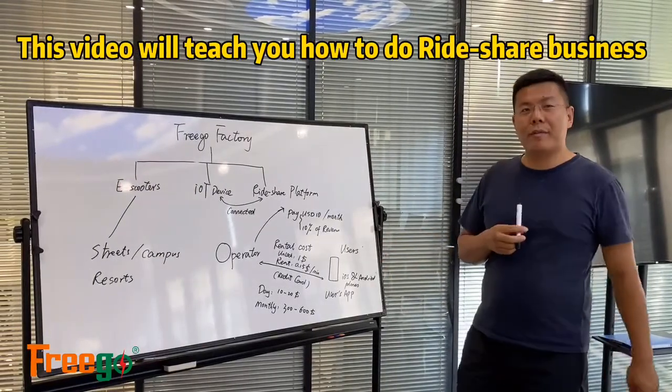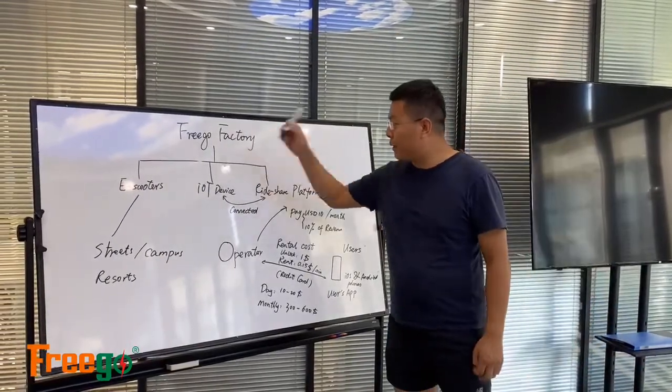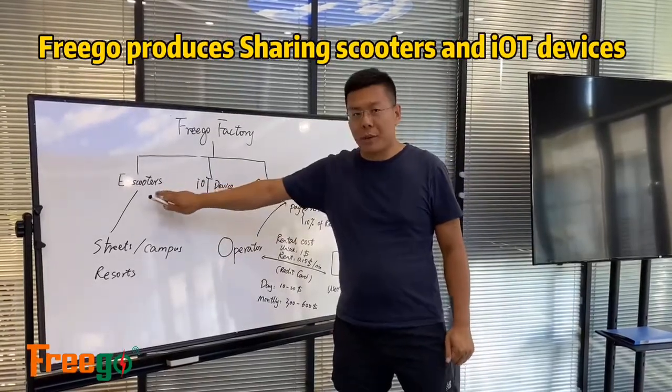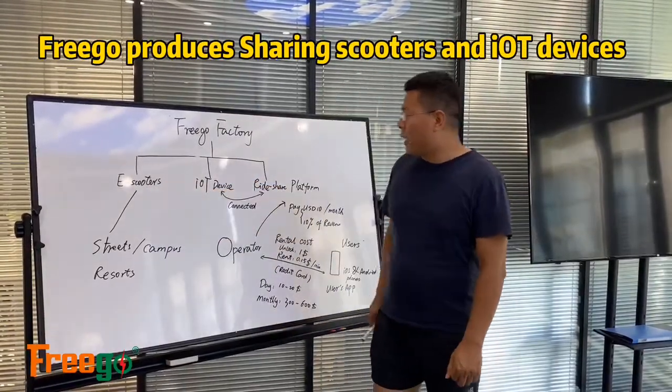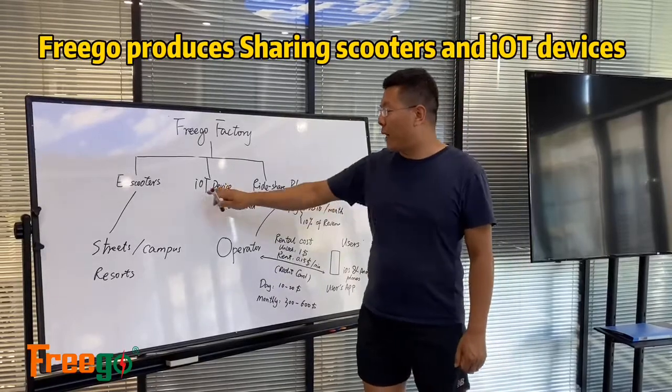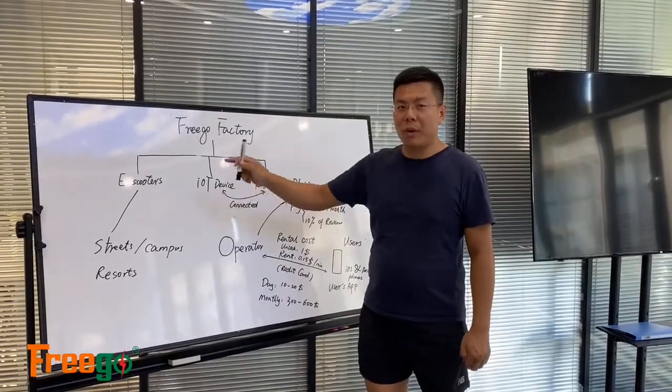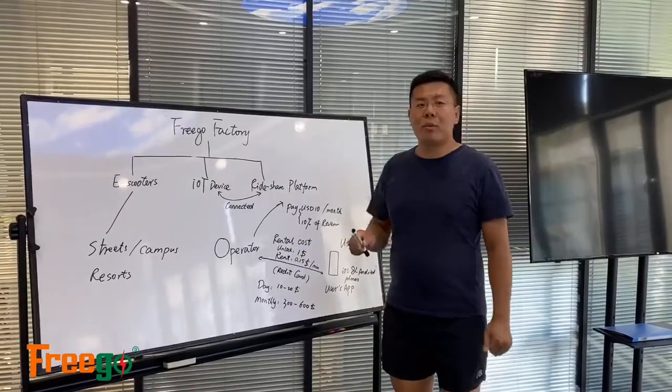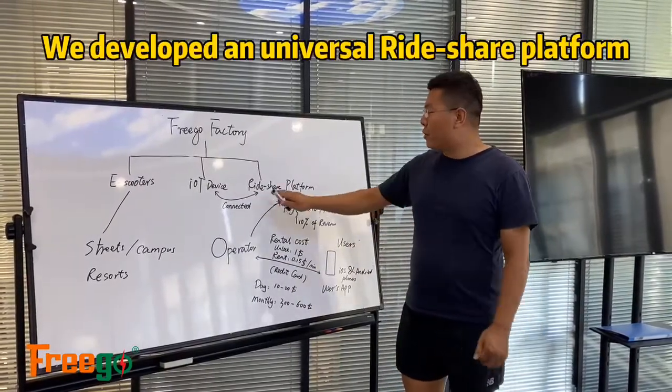As you see, we are the FreeGo factory. We produce electric e-scooters for sharing and also produce IoT devices. We are also a software company. At the same time, we developed our own RedShare platform.